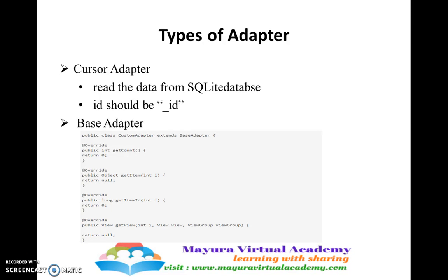Another type of adapter that Android system provides is the cursor adapter. If we have data stored in a SQLite database, we can fetch the data from the SQLite database and display it to the user as a list item. For the cursor adapter to work, the id of the SQLite database should be underscore id. If the id is different, the cursor adapter cannot read the data and display it in the list view.